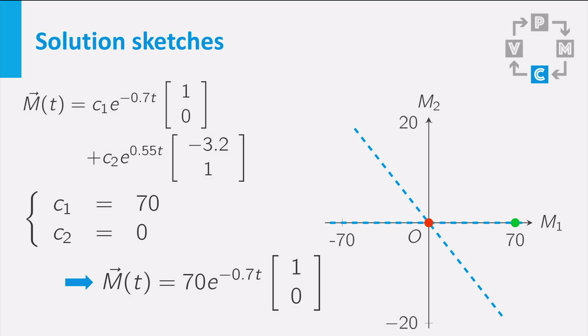For any value of time t, the solution is a multiple of the eigenvector, which means that the entire solution is a straight line segment from the initial solution to the origin. If c1 is negative and c2 remains 0, this leads to the same conclusion, so I can sketch another solution in the phase plane.